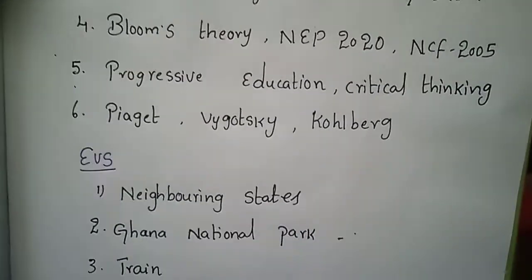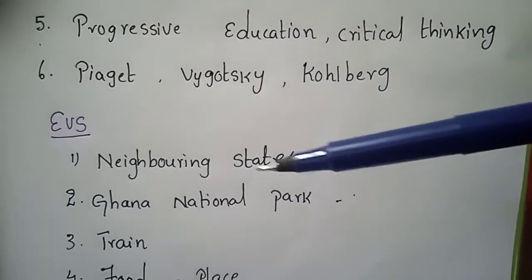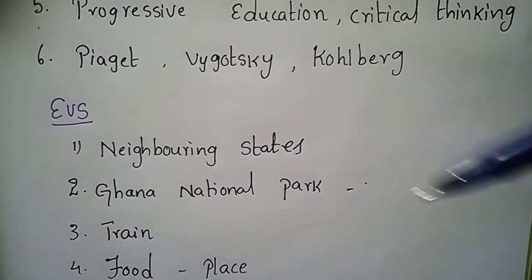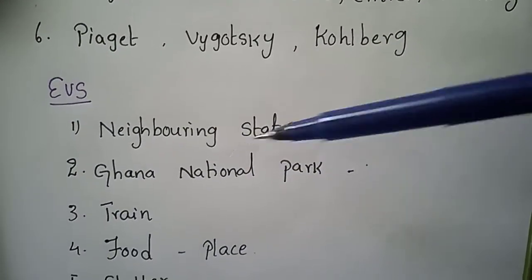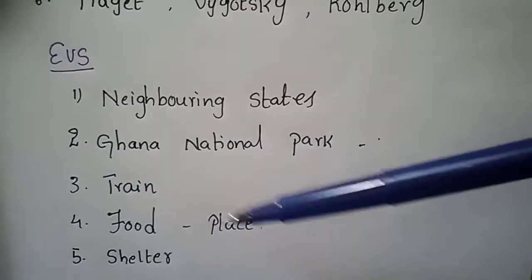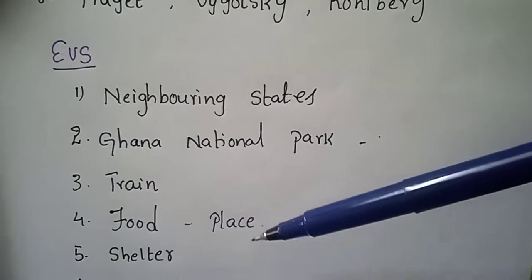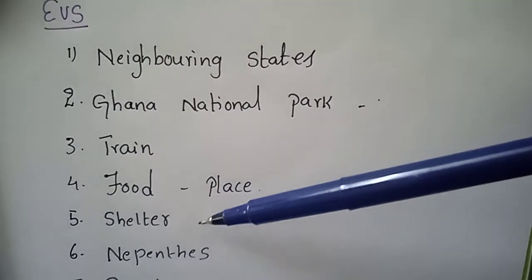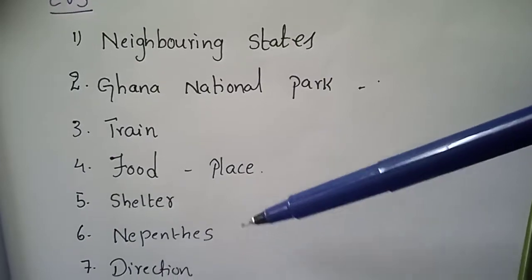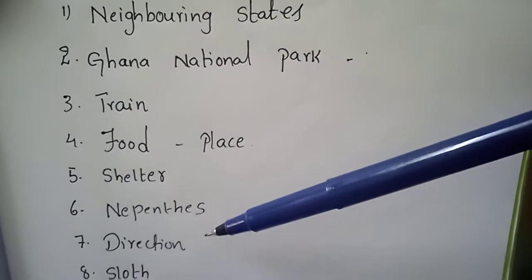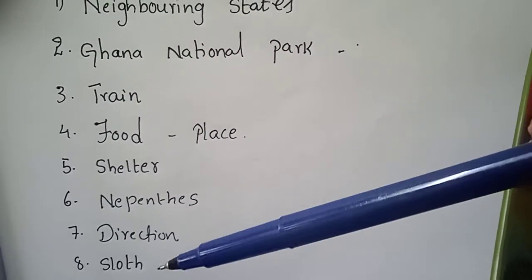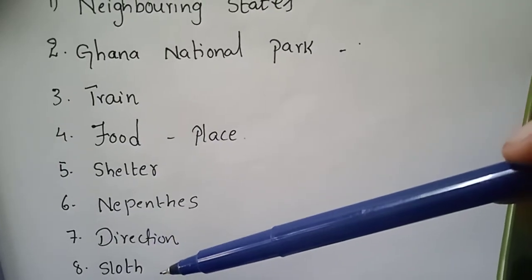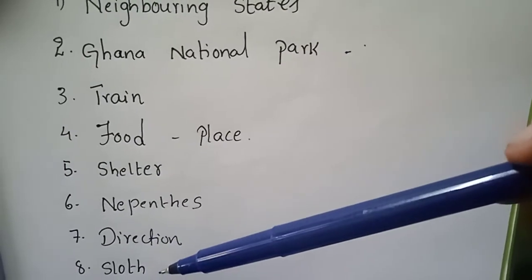Coming to EVS, the topics asked included neighboring states, Ghana National Park, a train-related question, food and place — for example, Kerala and coconut — shelter-related questions, Nepenthes, direction-related questions, and sloth. The sloth question had already appeared in the December 16th CTET Paper 1 exam.